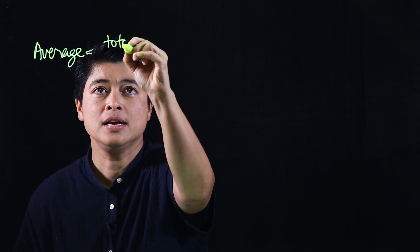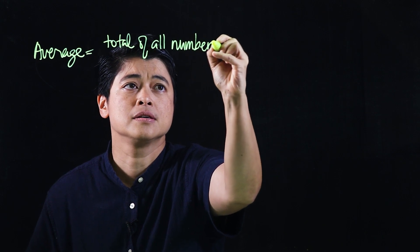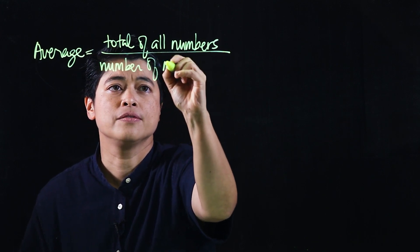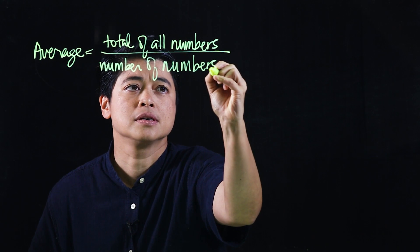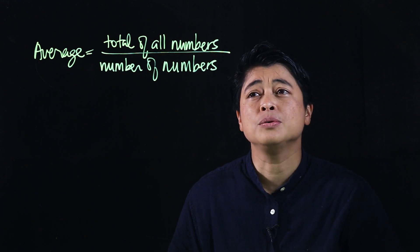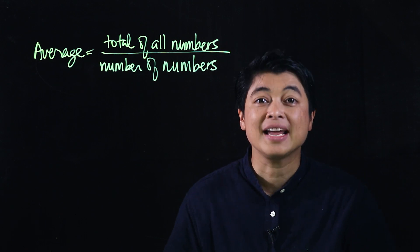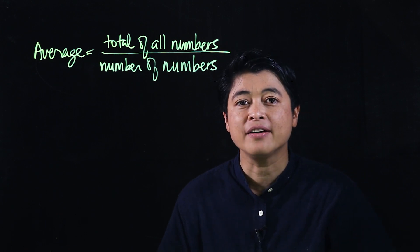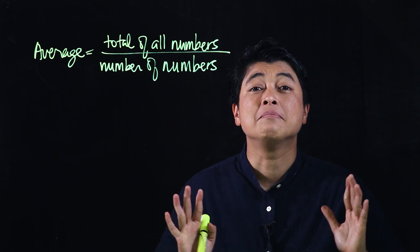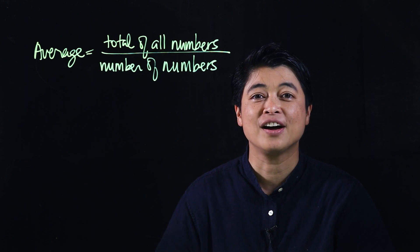Average is technically the total of all numbers divided by the number of numbers. The students are also expected to know how to read bar graphs and line graphs, since a bar graph and a line graph depict measurements that the kids must be able to read.